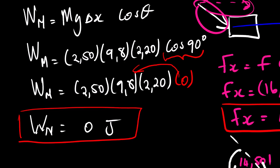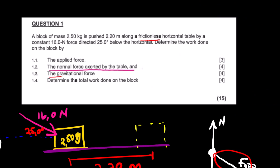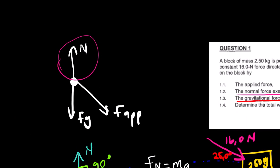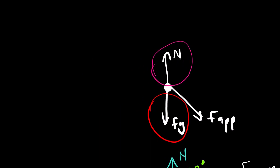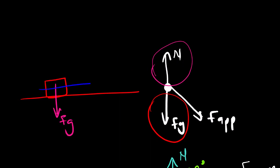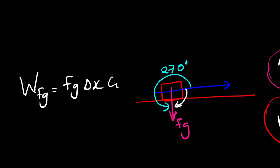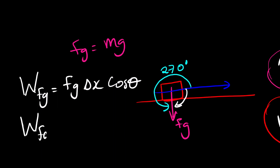The next question asks for the work done by the gravitational force. Going back to the free body diagram, we are looking for the work done by Fg. Fg is pointing in this direction and the displacement is in this direction. Moving to the negative direction we have 90 degrees; moving to the positive direction we have 270 degrees. We calculate: work done by Fg equals Fg times displacement times cos θ, and since Fg equals mg, we substitute accordingly.